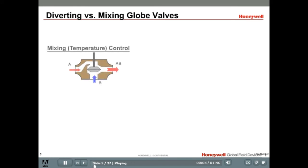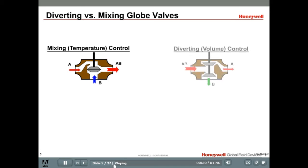All mixing globe valves offered by Honeywell are stem up to close between A to AB. As you can see, when the stem moves up, the plug will seal off A to AB. As the stem moves down, it will close off B to AB. For diverting globe valves, stem up closes ports B to AB. When the stem moves up, the plugs will move up and close off port B to AB and at the same time open A to AB.